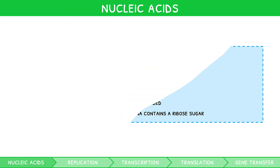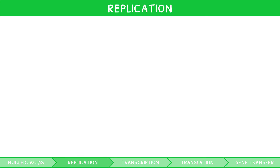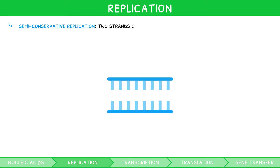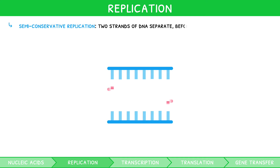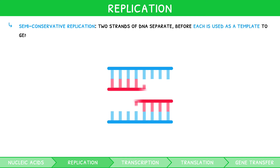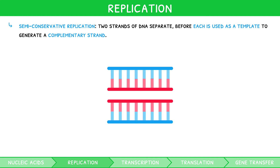But how is this DNA duplicated, read, and used to make protein? Watson and Crick suggested that DNA must replicate in a process known as semi-conservative replication. They suggested that the two strands of DNA must separate before each is used as a template to generate a new complementary strand. The term semi-conservative therefore arose as each new strand conserves half of the DNA from the original strand.